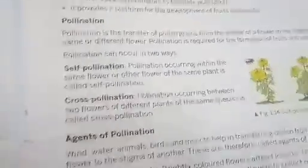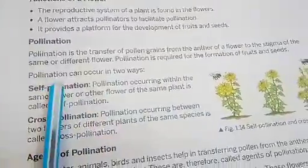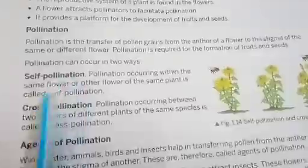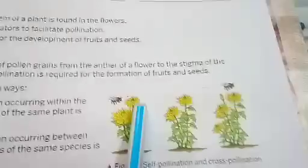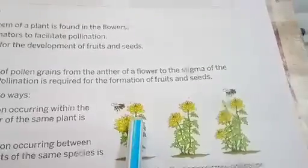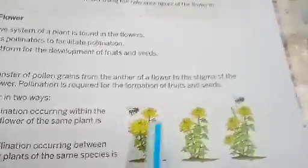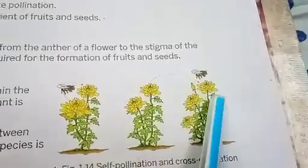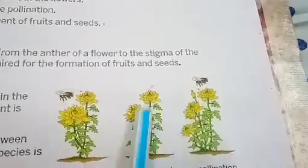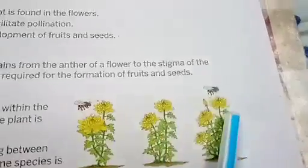When the pollen from the anther moves on to the stigma, that is called pollination. This pollination is of two types: self and cross. If the pollen grains from one flower move to the stigma of another flower of the same plant, that is self-pollination. If pollen grains from one plant move to the stigma of another plant, that is called cross-pollination.